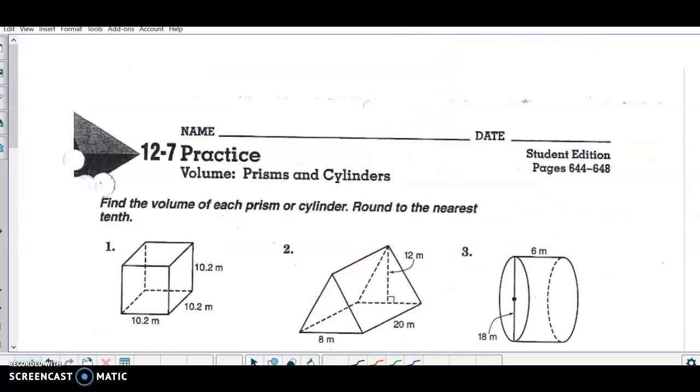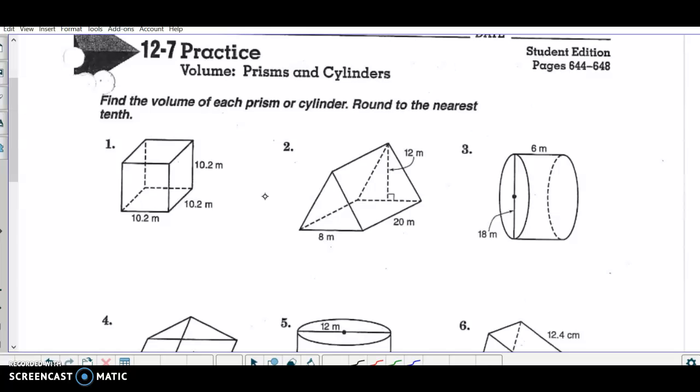So let's look at a couple of more. So here I have on number three. Notice I have a diameter. So my radius would be nine.